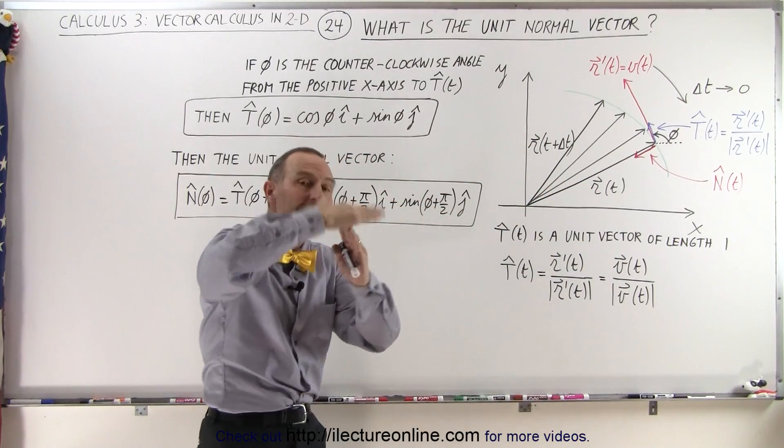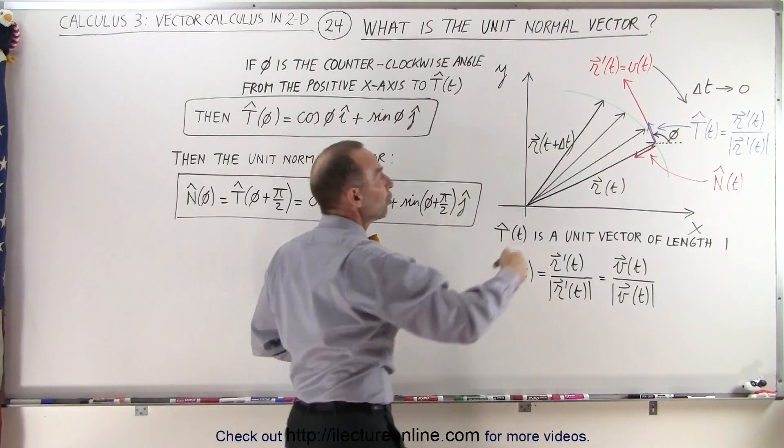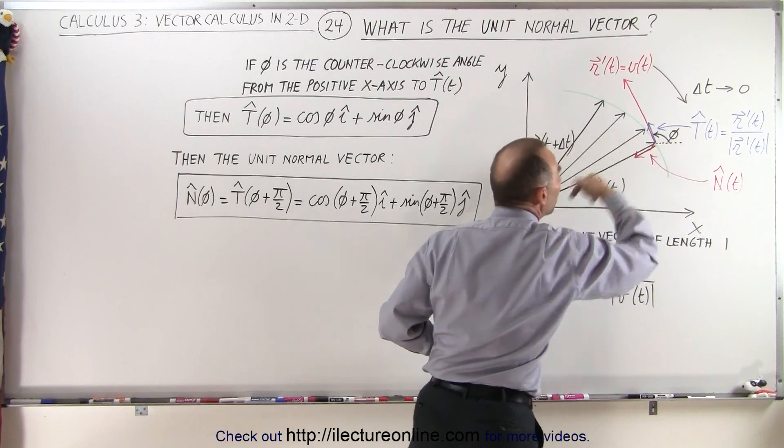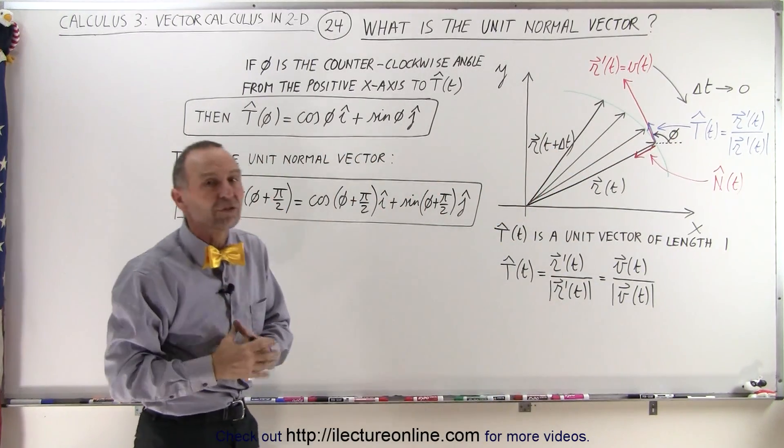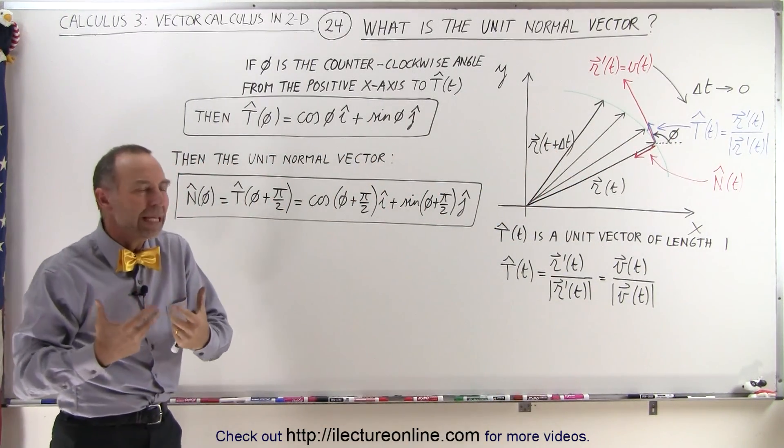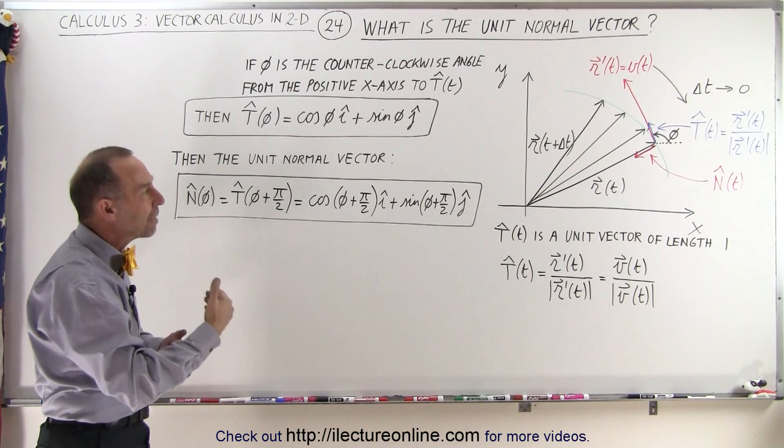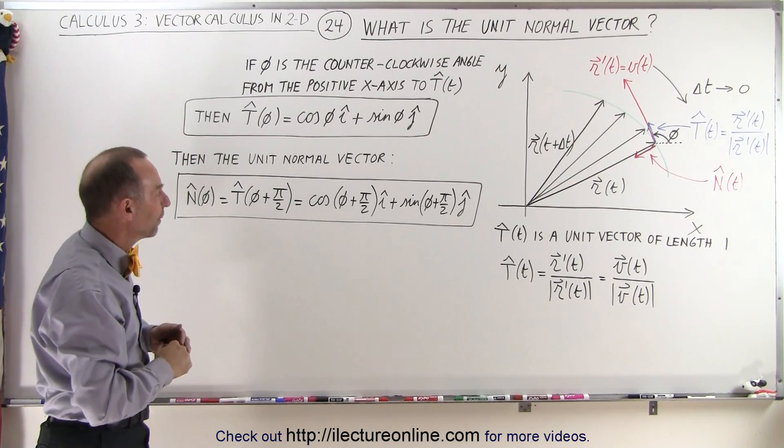And then perpendicular to that, the normal vector, which would then point towards what we call the centripetal acceleration of the particle. And so that's the meaning literally of the unit normal vector, I should say.